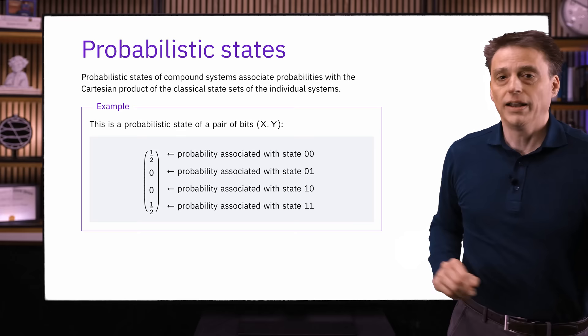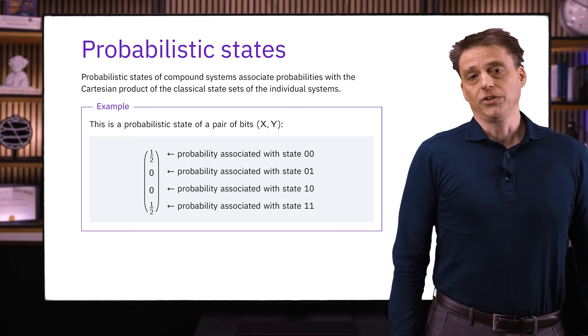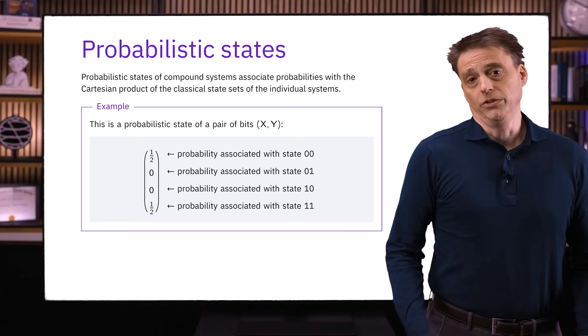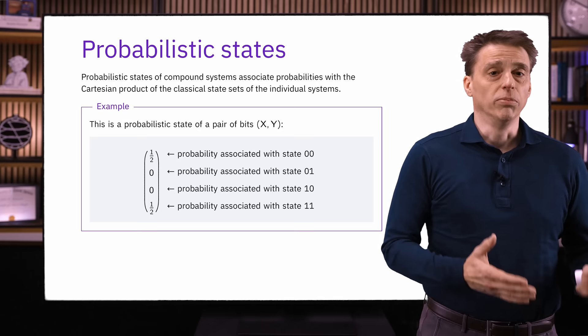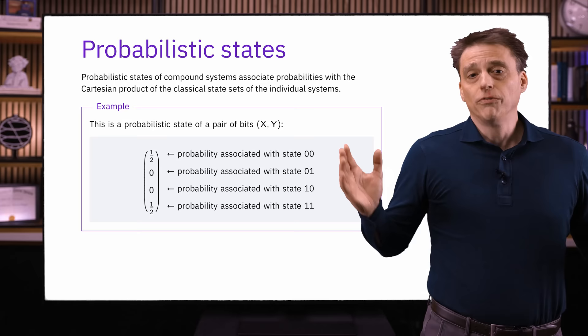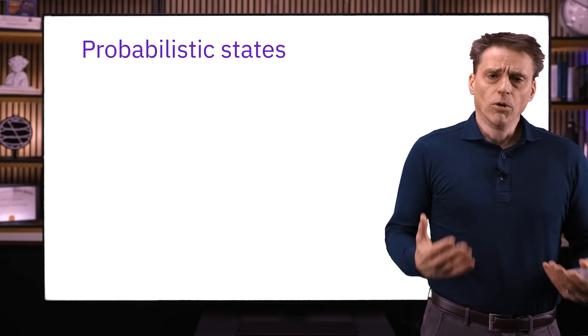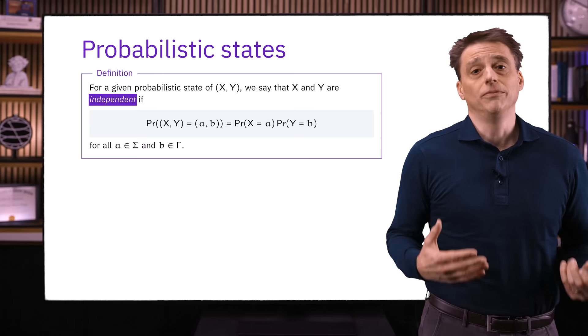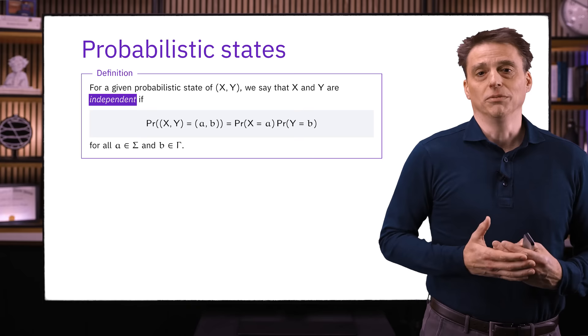This is an example of a probabilistic state where X and Y are correlated — the sense in which the whole is greater than the sum of the parts. It's not simply that we have a probabilistic state of X and a probabilistic state of Y and put them together; rather, we first put the systems together and then think about probabilistic states of the compound system. To be more precise about correlations, we start by defining independence — essentially the absence of correlation. Here the term independence refers to statistical independence, as opposed to linear independence of vectors; it's a fundamental notion in probability and statistics.